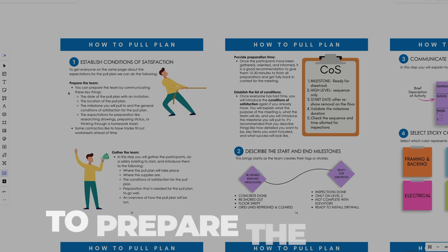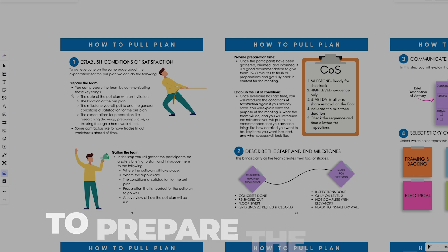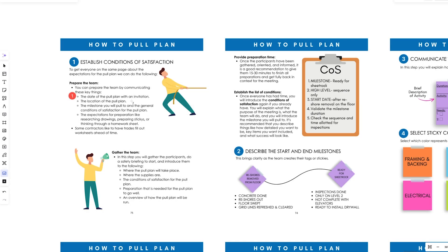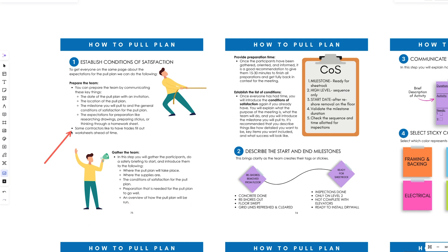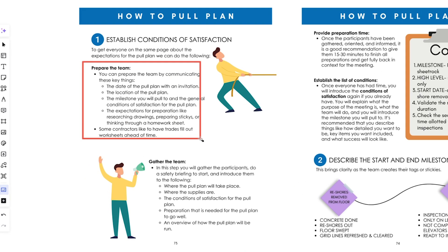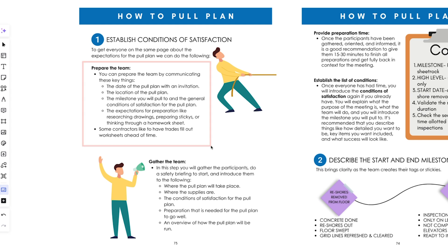The first thing I like to do is prepare the team by communicating the date of the pull plan, the location, the milestone we're pulling to, and the expectations for preparation. Sometimes I ask trade partners to fill out an Excel template so that they have their tags, stickies, and activities with durations and crew counts ready to go.